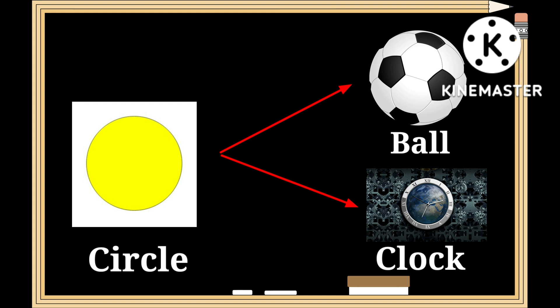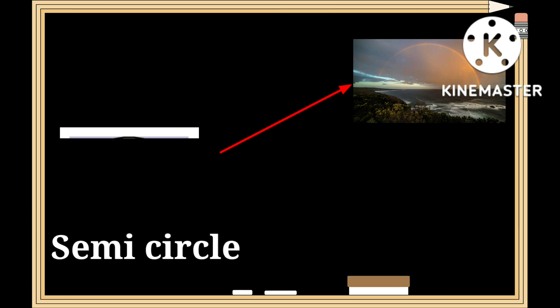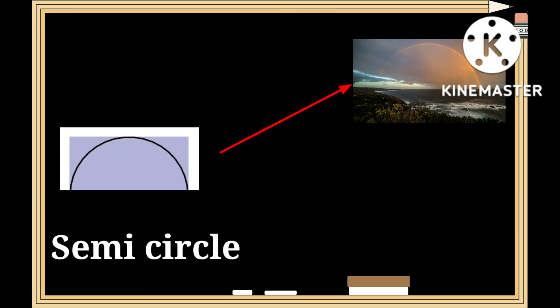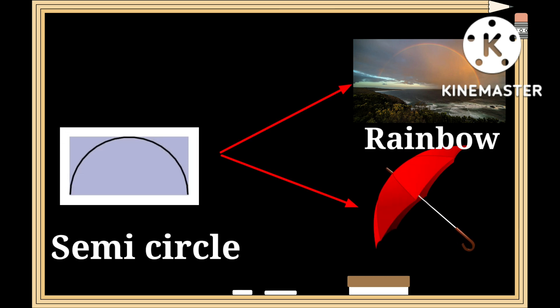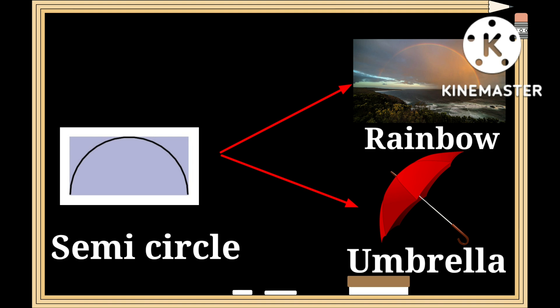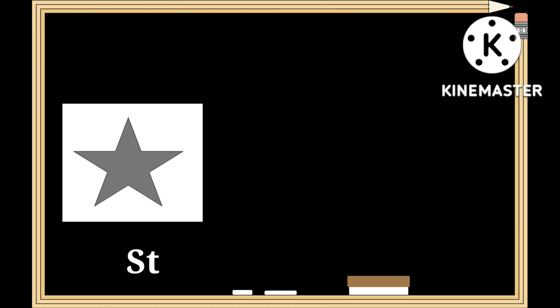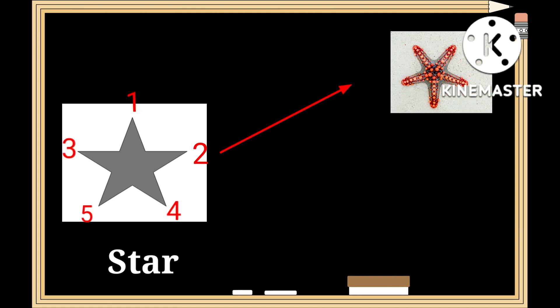This is a shape of a circle — c-i-r-c-l-e. As you can see, a ball and a clock both have the shape of a circle. This is a semicircle — s-e-m-i-c-i-r-c-l-e.